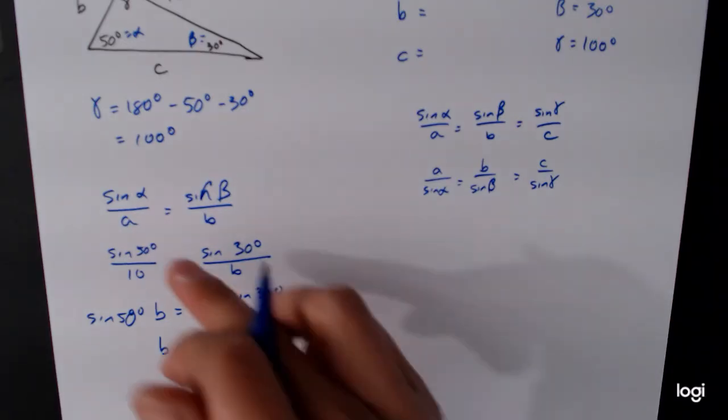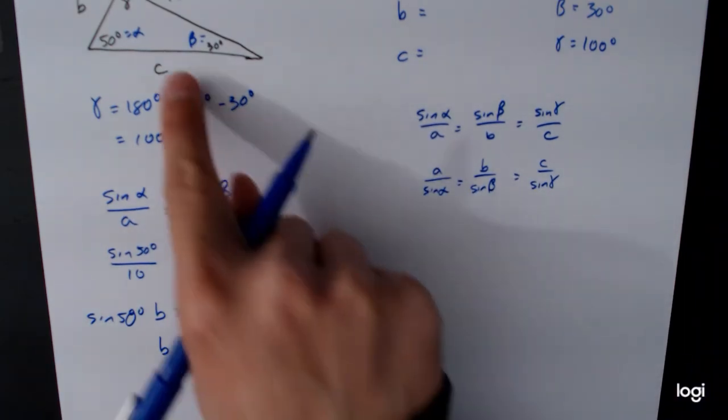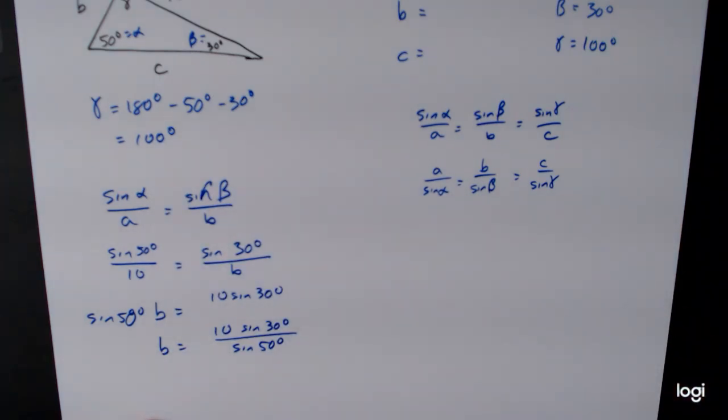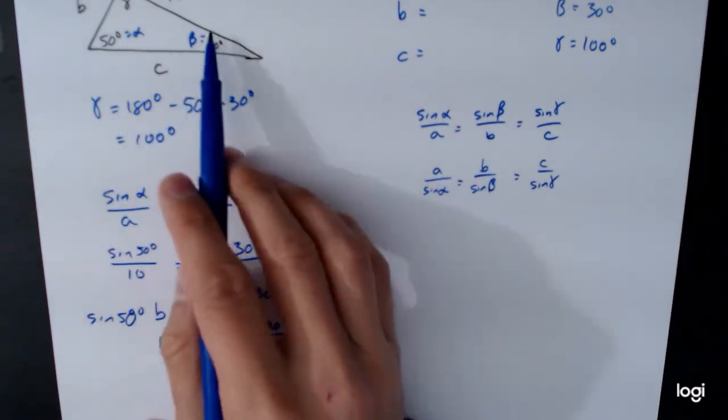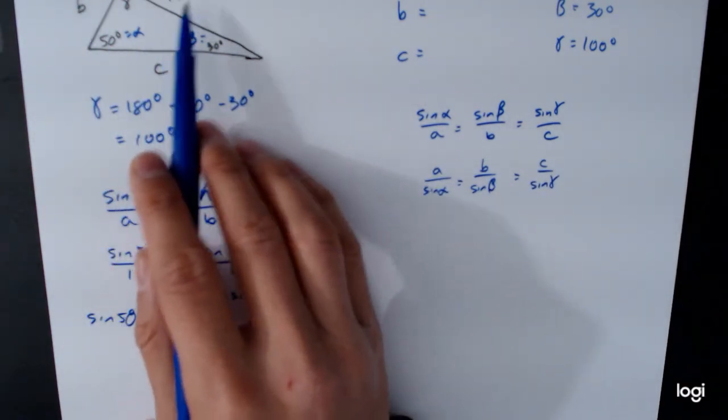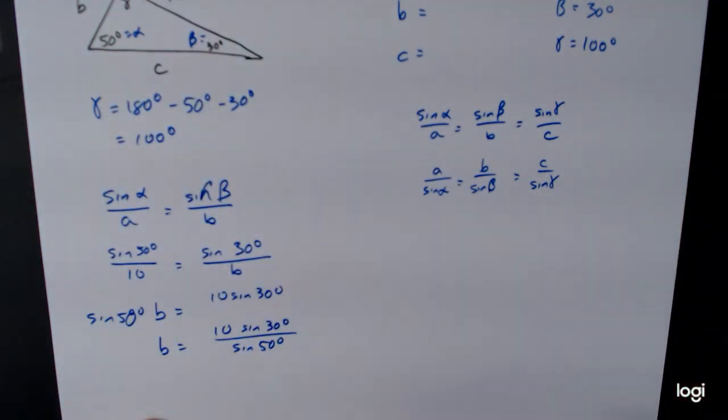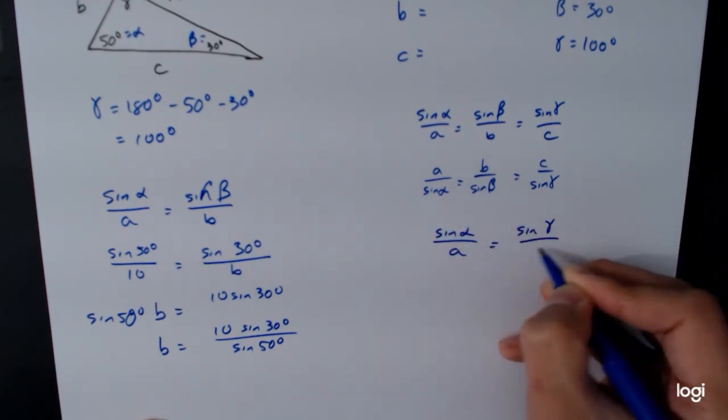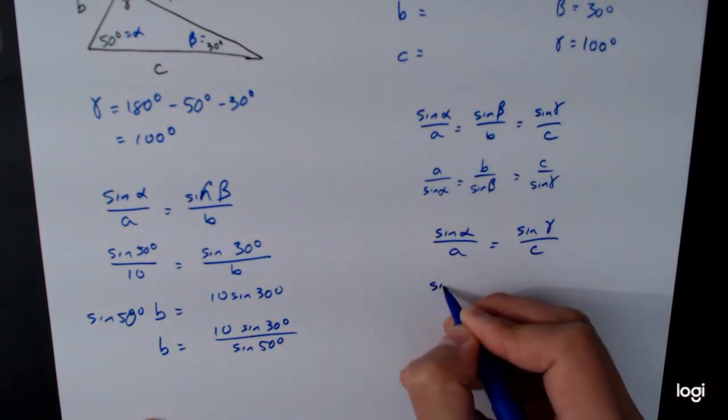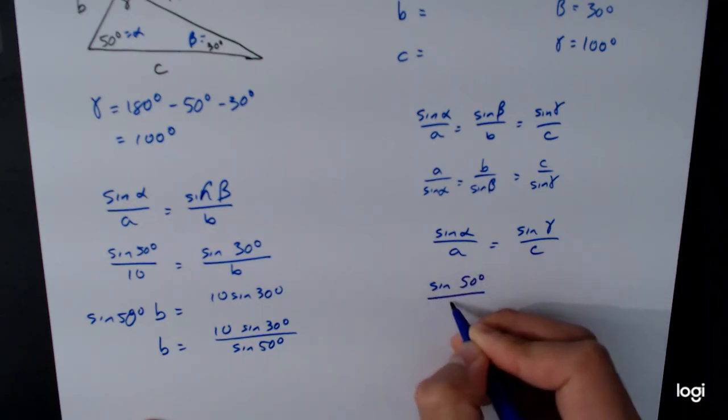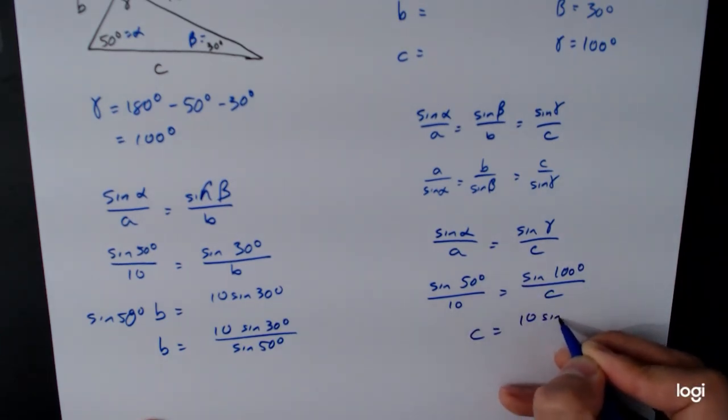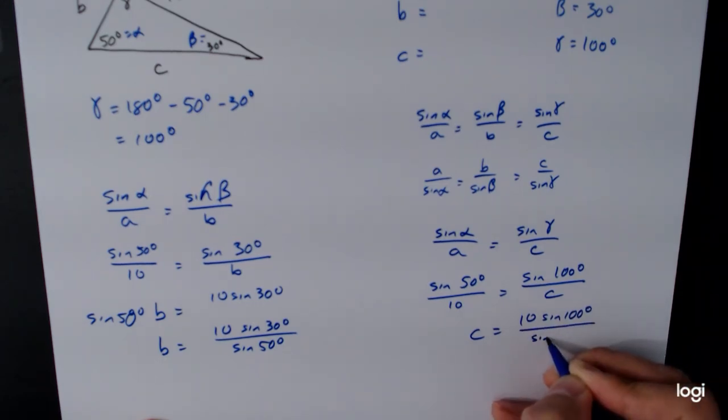If we wanted to find C, okay, well in this case we have no choice. We have to use our derived value. It happens sometimes, but again, it's really about trying to avoid it where you can. But instead of using B and beta, I'm going to use the A and alpha. And again, that's because A and alpha are both known values given to me from the problem. So sine of alpha over A is equal to sine of gamma over C. Check my values out. Sine of 50 degrees over 10 is equal to sine of 100 degrees over C. So C is equal to 10 sine 100 degrees over sine of 50 degrees.